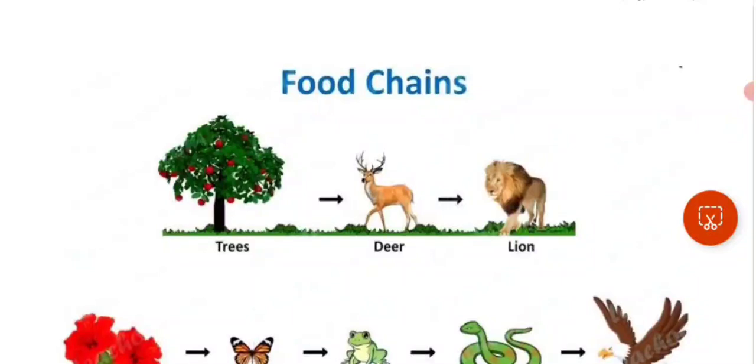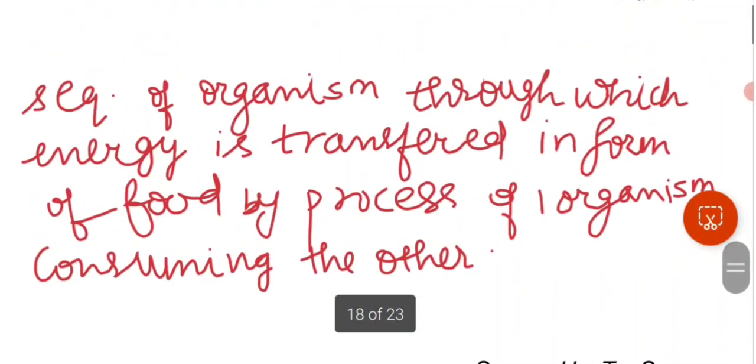Hello everyone, in this video we are going to discuss food chains and food webs. Food chain definition is the sequence of organisms through which energy is transferred in the form of food by the process of one organism consuming the other.